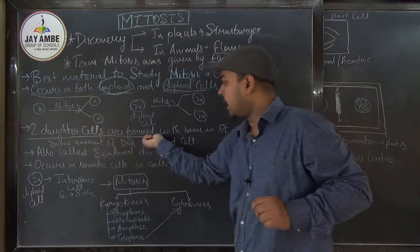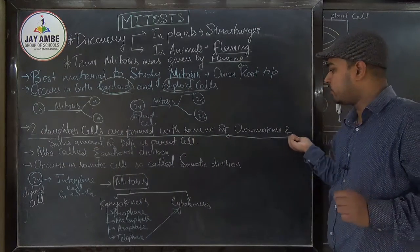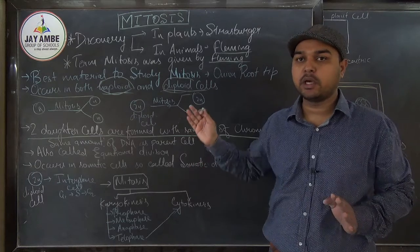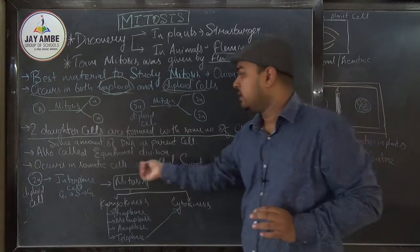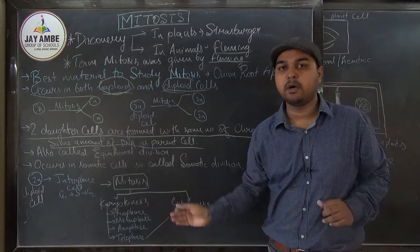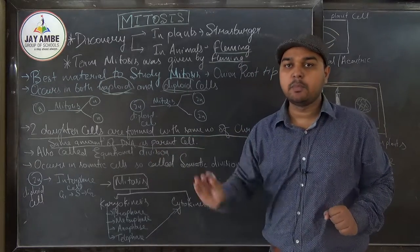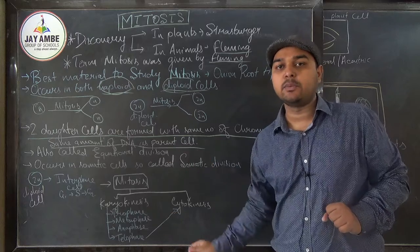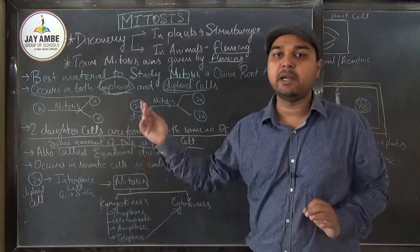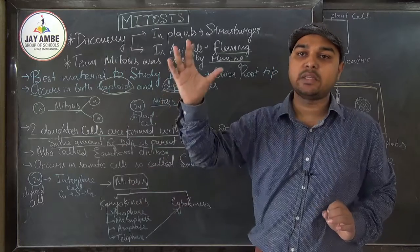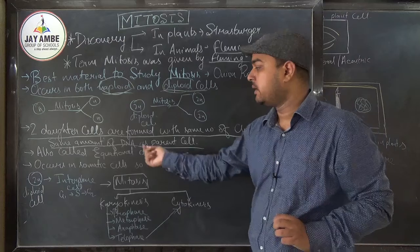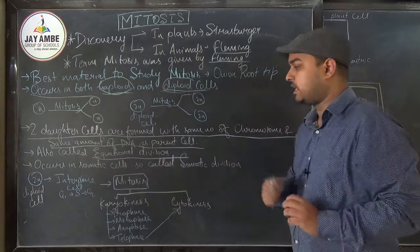Two daughter cells are formed with the same number of chromosomes. The chromosome number in the two daughter cells will be the same. The same amount of DNA that is present in the parent cell will also be present in the daughter cells and offspring. That's why it is called equational type of cell division.